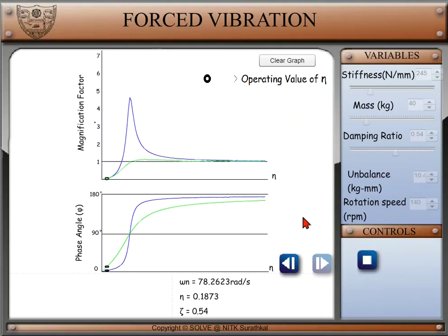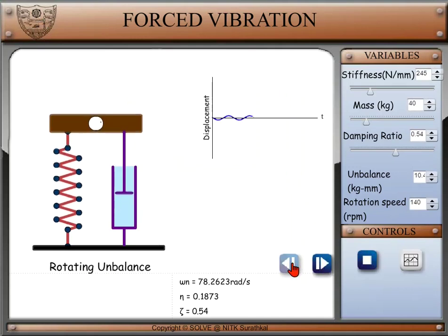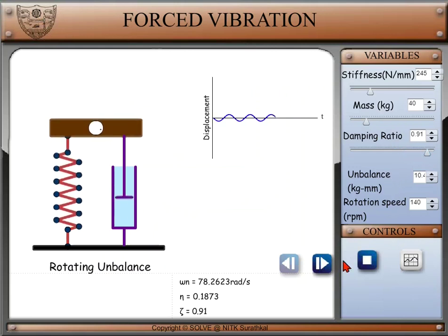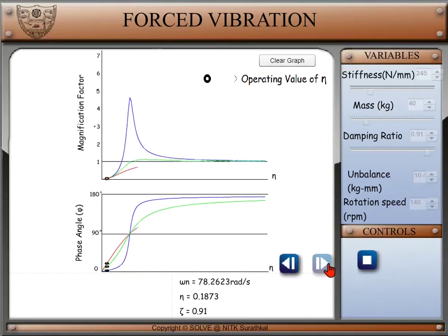Once again, click on left arrow to come back to animation screen and adjust the damping ratio value higher than 0.707 and click on right arrow to load the new graph of magnification factor and phase angle versus frequency ratio. Observe the changes in the magnification factor curve.